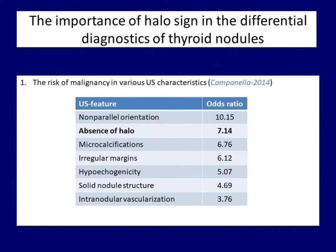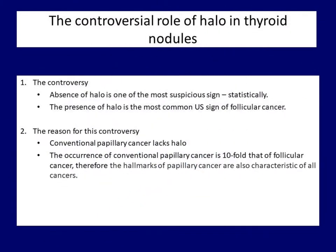This table summarizes the findings of a meta-analysis. These data provide a very encouraging picture of the potential role of halo. The absence of halo significantly increases the incidence of cancer; the odds ratio is greater than that of microcalcification. However, these numbers are deceptive. None of the thyroid classifications or guidelines enlists the absence of halo among suspicious ultrasound characteristics. One of the main reasons is that, in contrast to microcalcifications, a great proportion of benign nodules also lack the halo sign.